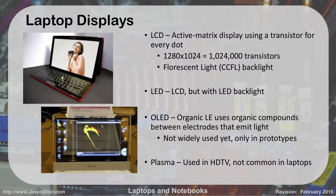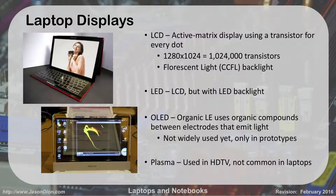Laptop displays: LCDs use a compact fluorescent backlight, giving you an active matrix display using a transistor for every dot. At a resolution of 1280x1024, you have over a million transistors lighting up to make the screen. If that backlight dies, your screen image will be extremely dark. They tend to die after about three or four years, so if you have an older laptop, that can happen.